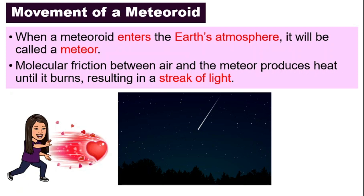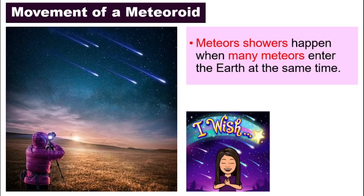That results in a streak of light that we call a shooting star, or a meteor — something beautiful if we get a chance to catch it when we go out during nighttime. Sometimes it is not only one meteoroid that enters the atmosphere. Many meteoroids can enter the Earth at the same time, and that will cause a meteor rain, or a meteor shower.